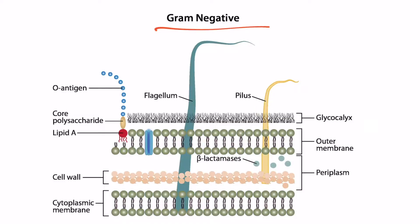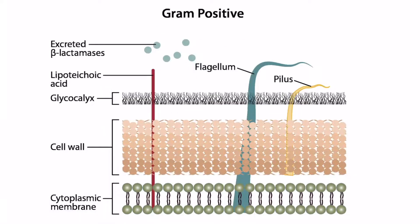Looking at the gram-negative bacteria, we can see the cytoplasmic membrane here, the outer membrane here, and the periplasm is the space between the two — this space contains beta-lactamases. Gram-positive organisms don't have an outer membrane, so they don't have a periplasm, and their beta-lactamases are excreted, which you can see here.